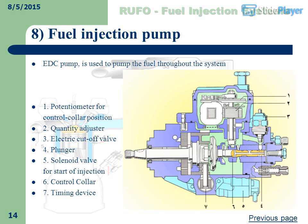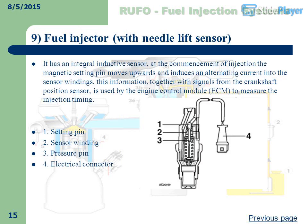EDC Pump components include: potentiometer, quantity adjuster, electric cut-off valve, control collar position, plunger, solenoid valve for start of injection, control collar, and timing device.